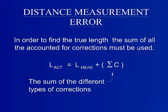After calculating all of the corrections previously shown, the true length measured can now be found. In order to do this, all of the corrections must be summed up and added to the total length measured. The newly calculated distance is the true length measured.